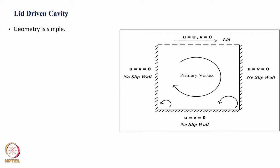The problem considered is the lid driven cavity. What is shown is a 2D cavity, though it can be 3-dimensional also. We have depth and width, and depending on the ratio of depth to width, it can become a square cavity or a cavity of different aspect ratio. All three sides are walls, represented by hash lines. On the top you have a lid driven by a velocity — for this particular case u equals a specific velocity. This can be one particular value or a function of sin or cos.